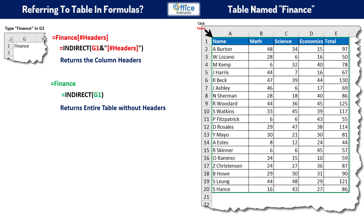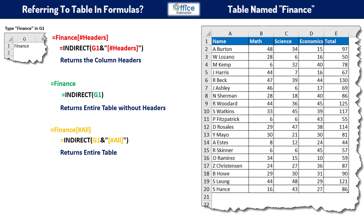You can type an equal sign, then point to the upper left corner of the table. When you see the black rotated arrow, click twice — it will select the entire table including the headers. Alternatively, use the INDIRECT function.